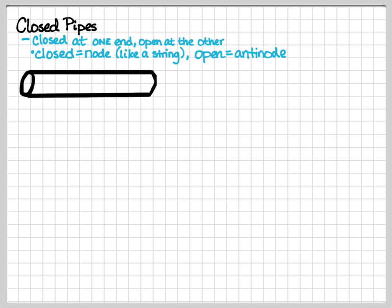Closed pipes look a little different. A closed pipe is sealed off at one end, which forces a node to occur at that end. The other side is just open, just like an open pipe. So there's going to be an antinode forming there.